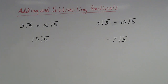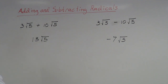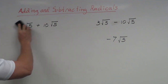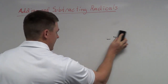To summarize: if I want to add or subtract radicals, I treat them like regular variables — I check whether they have the same radical, and if so, I add or subtract the coefficients. But what if we don't have the same radicals? Let's do a couple more examples.